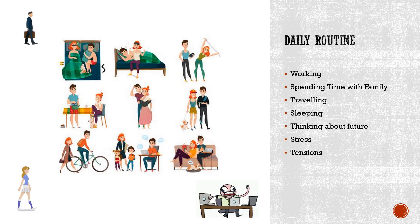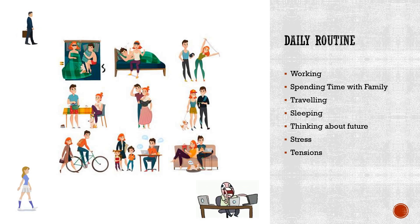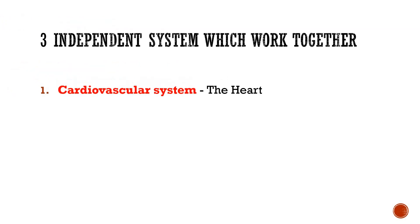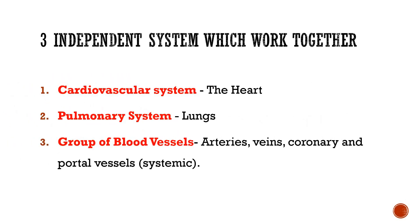It is this system which is responsible to deliver nutrients and oxygen to all the cells in the body and keep them alive. The circulatory system consists of 3 independent systems that are working together: 1) the cardiovascular system, i.e. the heart; 2) the pulmonary system, i.e. the lungs; 3) a group of blood vessels which keeps the heart, lungs and all other parts of the body connected.